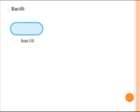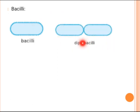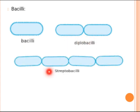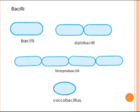Bacilli are rod-shaped bacteria. When two bacilli attach to each other, it forms diplobacilli. When bacilli form chains, it is known as streptobacilli.